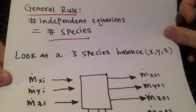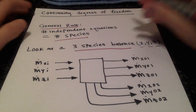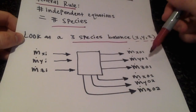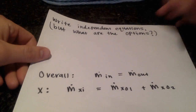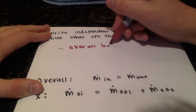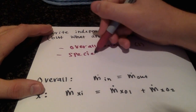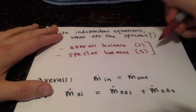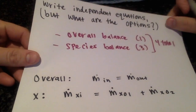If we just have a three-species balance and we call those species X, Y, and Z going into a separator — each of the species going in and each of them going out — what are our options? We can do an overall balance, which is just one equation, and then we can also do a species balance. Because there's X, Y, and Z, that's three equations, so we have four total.